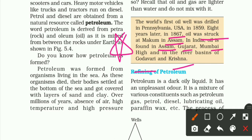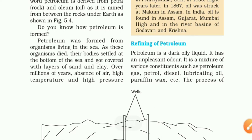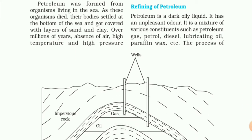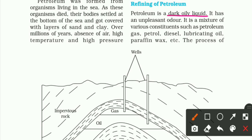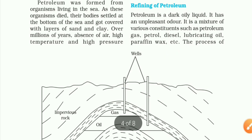Yahan se questions aa sakte hain. Ab petroleum mil gaya, toh ab kya hua? Petroleum ki refining ki gayi. Petroleum basically hota kiya hai — dark oily liquid raheta hai. Aapko pata hona chahiye ki petroleum kaisa raheta hai: dark oily liquid hota hai aur it has an unpleasant odour. Ye bhi pooch sakta hai — smell kaisi hoti hai petroleum ki? Unpleasant odour hoti hai.